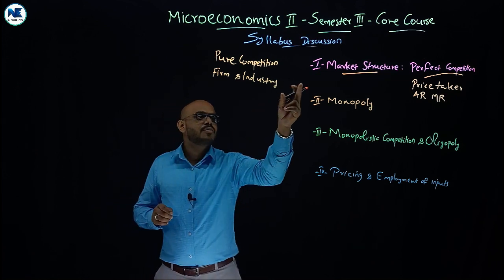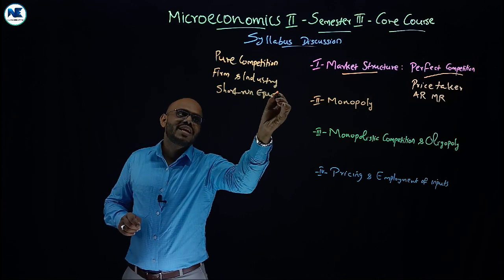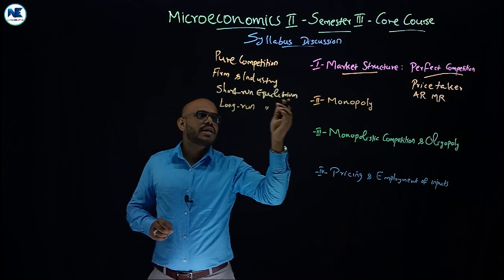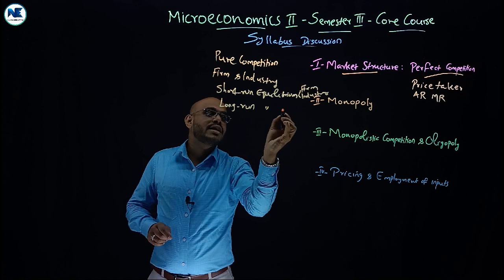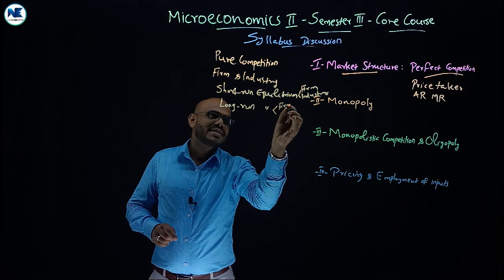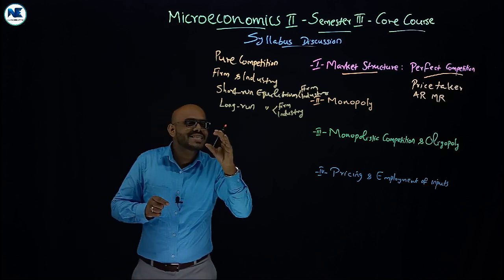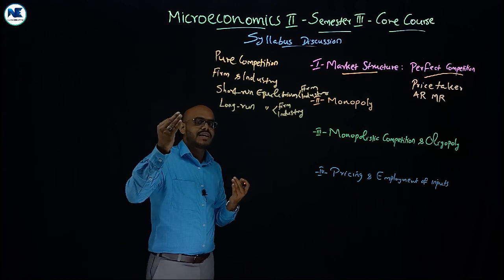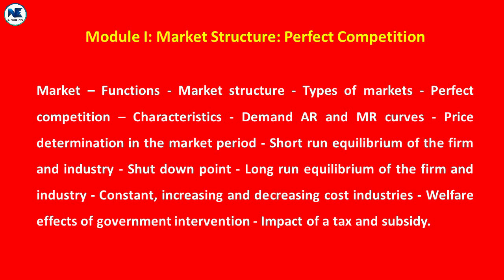Then we focus on short-run equilibrium and long-run equilibrium — short-run equilibrium of the firm and industry, and long-run equilibrium of the firm and industry. Simple diagrams with cost curves are easy to explain but score high marks in exams. First module areas also include welfare effects of government intervention, and the impact of tax and subsidy.